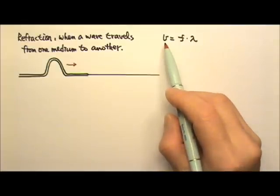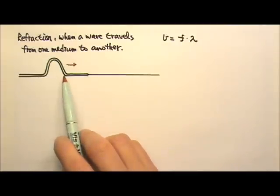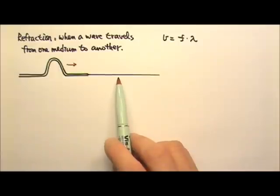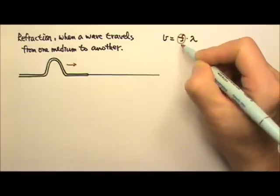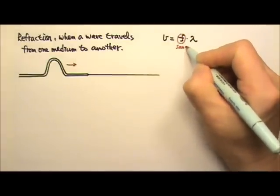Remember that the speed of a wave mainly depends on the medium. So when a wave travels from one medium into a different one, its speed changes. The one that does not change is the frequency.